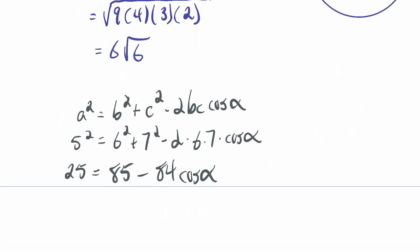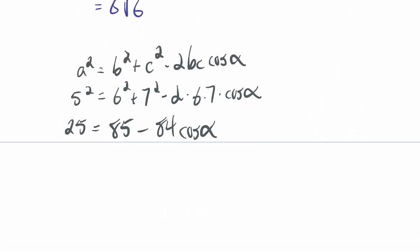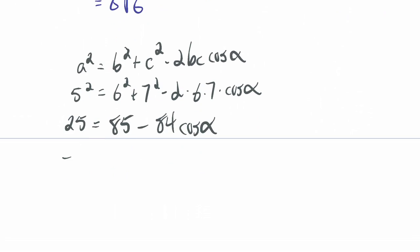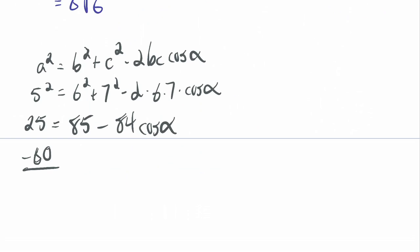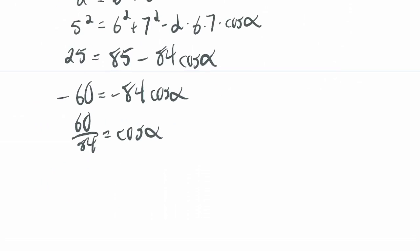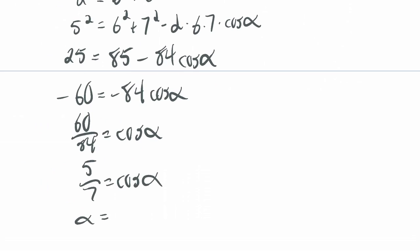So that's going to be 25 equals 36 plus 49, which is 85, minus 84 cosine alpha. So now I'm going to subtract 85 on both sides. I'll get negative 60 equals negative 84 times cosine alpha. Then I can divide by negative 84 on both sides, so I'll have 60 over 84. The minus signs cancel, which equals cosine alpha. And then I can reduce. This is 5 over 7 equals cosine alpha.